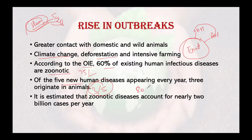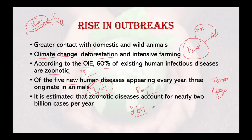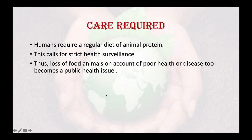80 percent of biological agents with potential bioterrorist use are zoonotic pathogens — pathogens being disease-causing microorganisms. In bioterrorism, a pathogen could be used to attack a community and kill millions. It is estimated that zoonotic diseases account for nearly 2 billion cases per year, resulting in more than 2 million deaths — more than HIV/AIDS and diarrhea combined. One-fifth of premature deaths in poor countries are attributed to diseases transmitted from animals to humans.